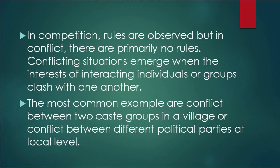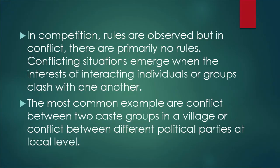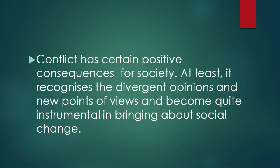The difference between competition and conflict: in competition, rules are observed, but in conflict there are primarily no rules. Conflict situations emerge when the interests of interacting individuals or groups clash with one another. Common examples include conflict between two caste groups in a village or between different political parties at the local level. For instance, two groups observing Ganesh Puja competing to do it in the best manner is competition, but when conflict happens between two caste groups due to political rivalry, that is called conflict. Conflict has positive consequences for society — it recognizes divergent opinions and new points of view and can be instrumental in bringing about social change.